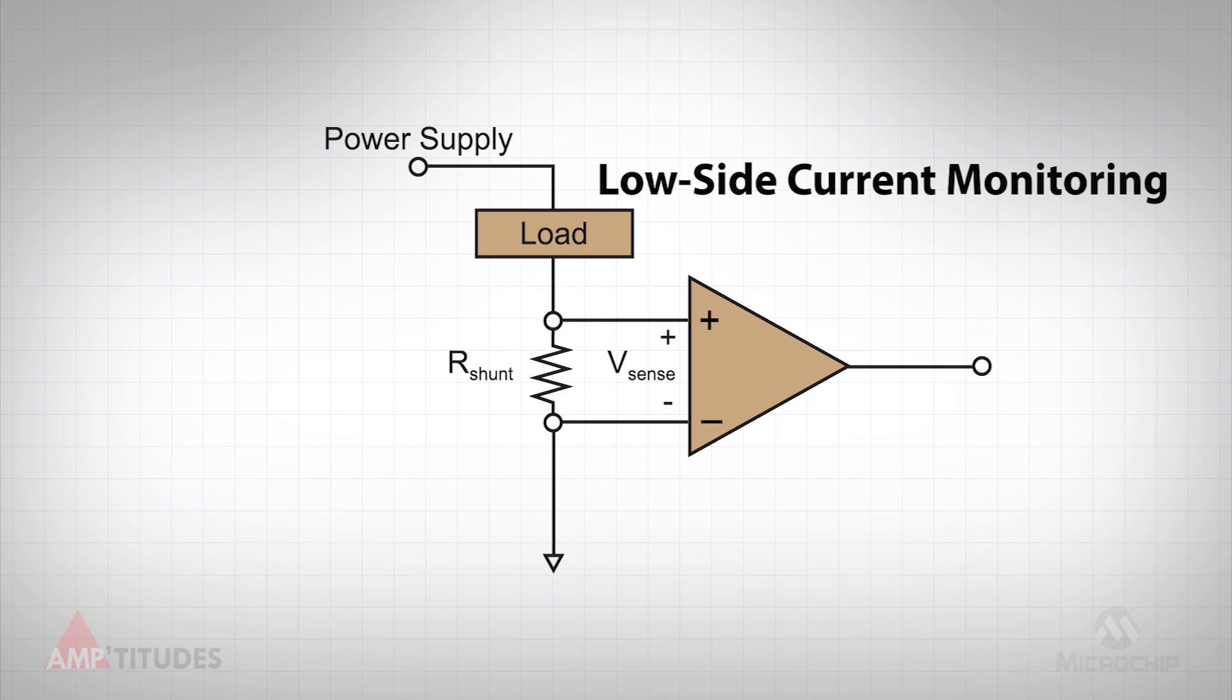For low-side current monitoring, the shunt resistor is placed between the load and ground, as shown here.